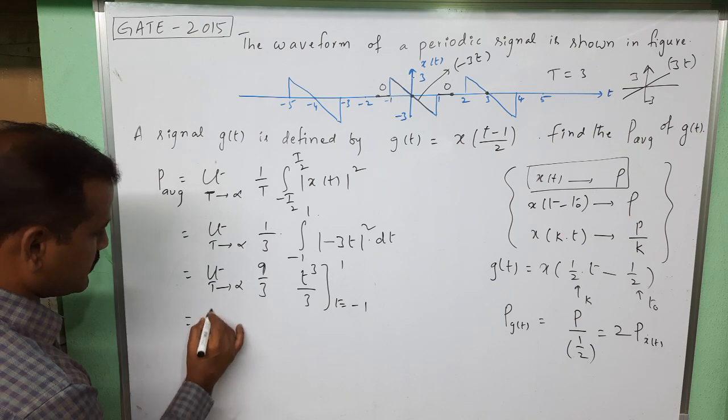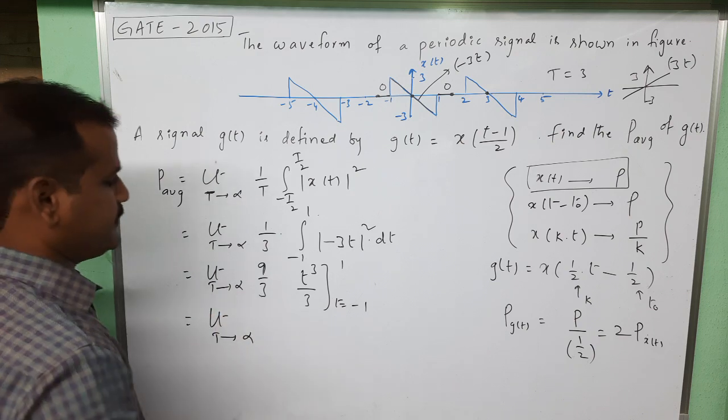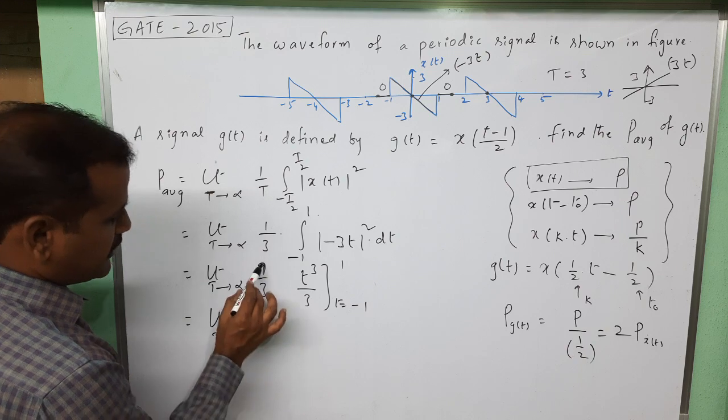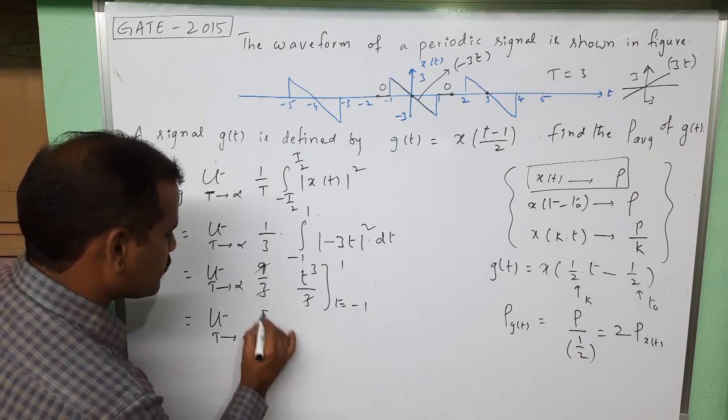Further simplification: limit T tending to infinity. Here 3 times 3, the 9 cancels.